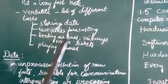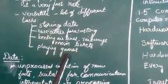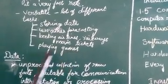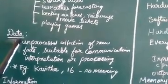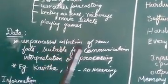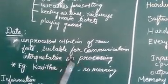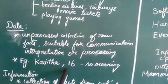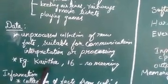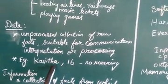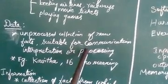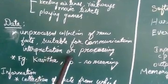Computers are used for storing data, weather forecasting, booking airline and railway tickets, playing games, and more. Data is an unprocessed collection of raw facts suitable for communication, interpretation, and processing. For example, 'Kavitha, 16' — just a name and number — that is raw data with no immediate meaning on its own.